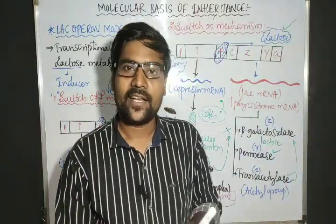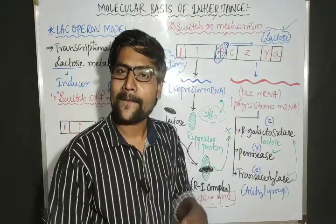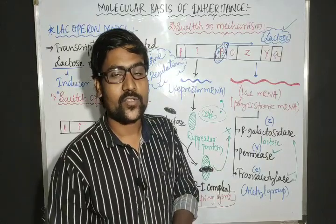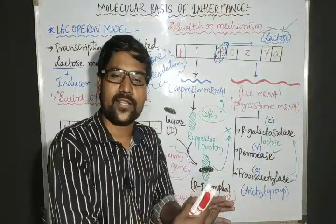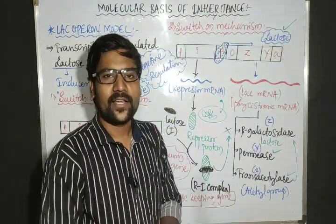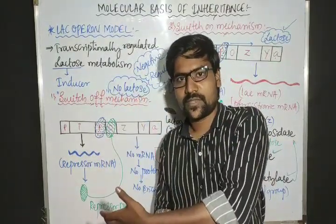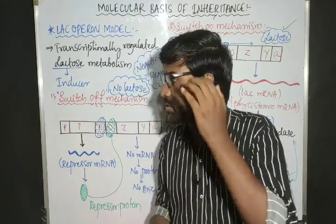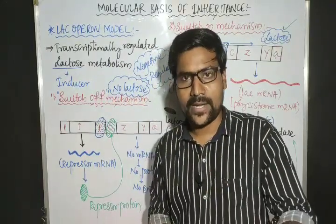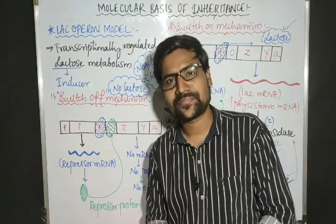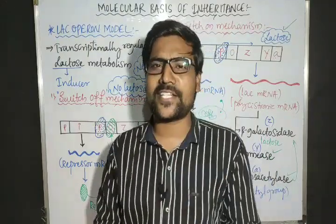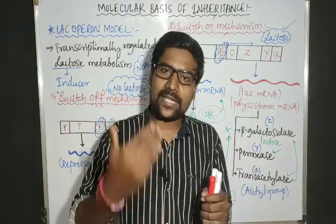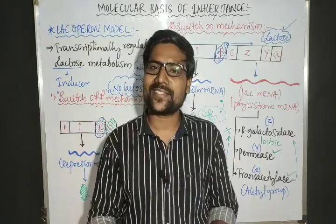All genes work in a coordinated, regulated manner, and this entire lac operon concept was given by Jacob and Monod — so this model is also called the Jacob-Monod model. In 1965, they received the Nobel Prize for this explanation. Please review this concept, take notes, and share any doubts or feedback in the comment box. In the next class, we will start the Human Genome Project — another very interesting concept in the same chapter.